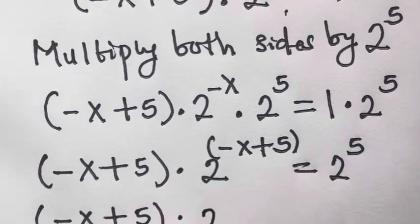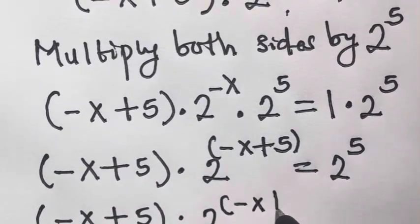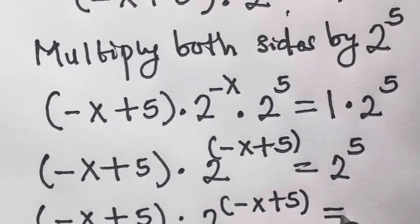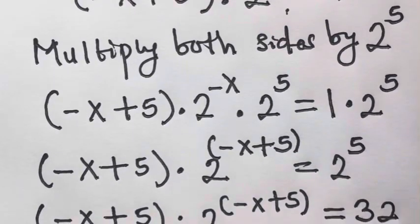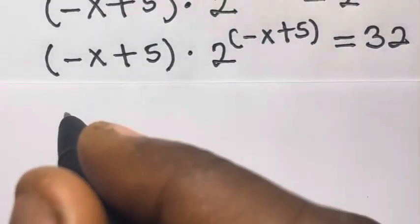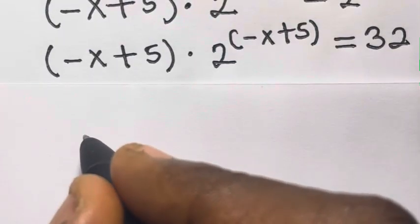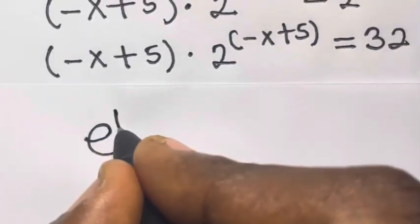And we know that 2 raised to power 5 gives us 32. So we have minus x plus 5 times 2 raised to power minus x plus 5 equals 32. From here let's recall that exponential of ln(m) equals m, because the exponential cancels the natural log.